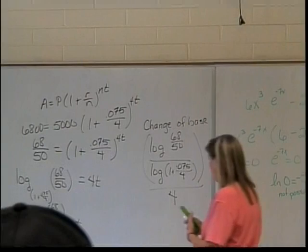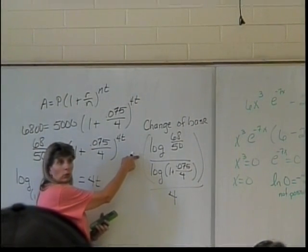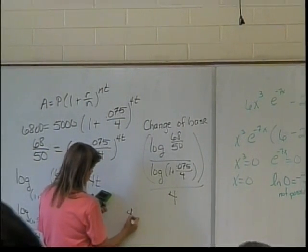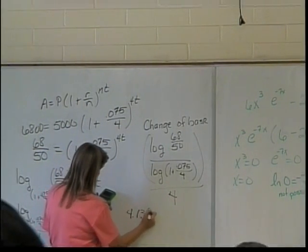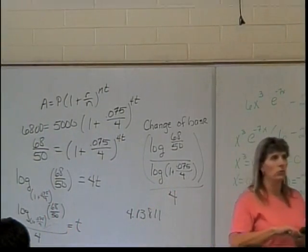And so for WebWork, by the way, WebWork would let you type it in like this too, but if you wanted to, you don't have to plug it into your calculator to get your WebWork answer. So that would be 4.13811. That's good enough. Four to five decimal places for WebWork works.